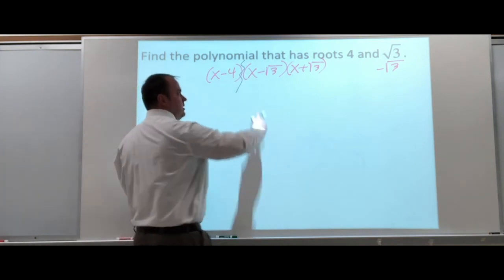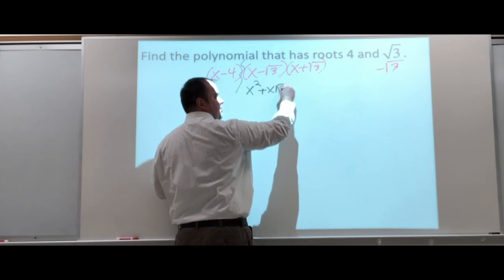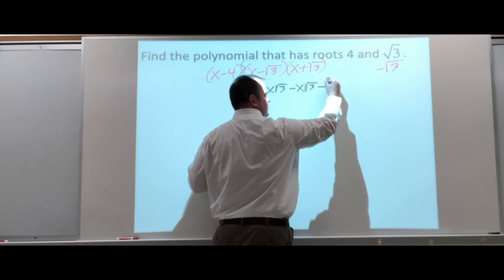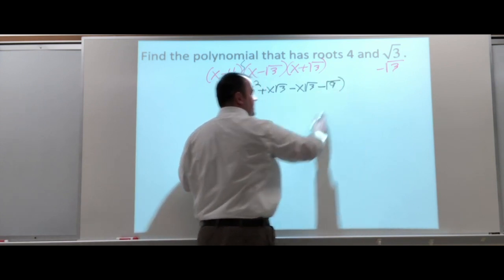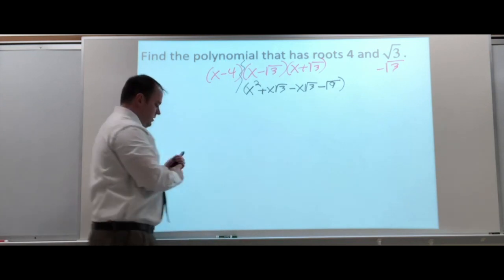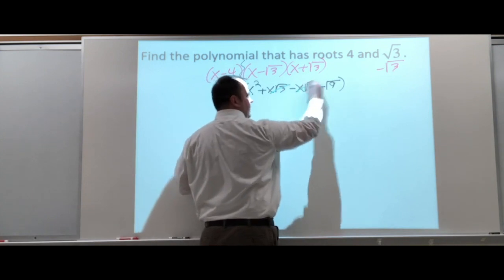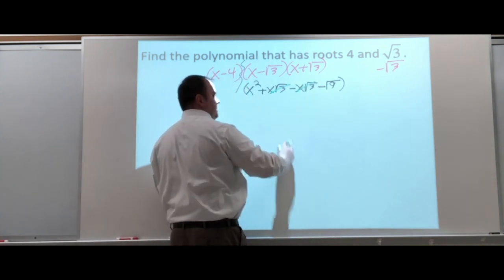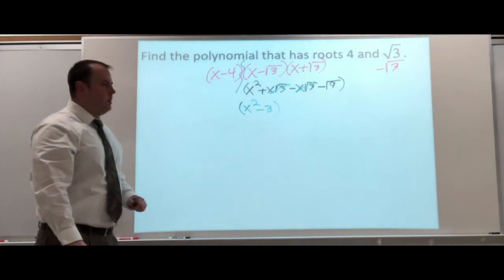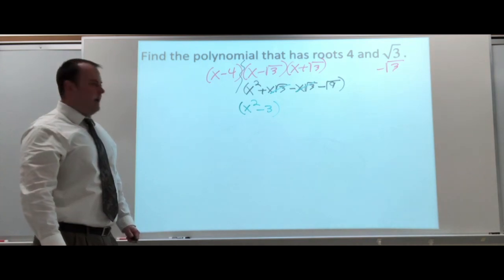Multiplying, you get X squared plus X square root of 3 minus X square root of 3 minus square root of 9. And if you simplify this, look at it. When we simplify it, the X square root of 3s cancel each other out, and the square root of 9 goes to 3. So, we have X squared minus 3. So, all of our radicals kind of disappear. They cancel out or simplify.